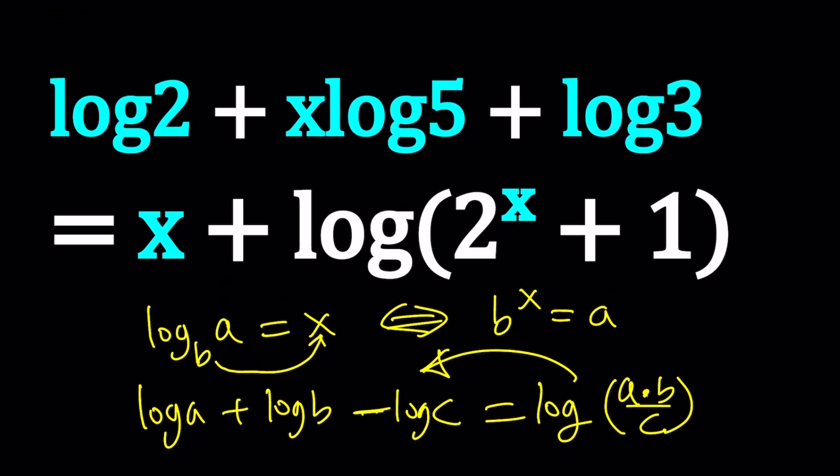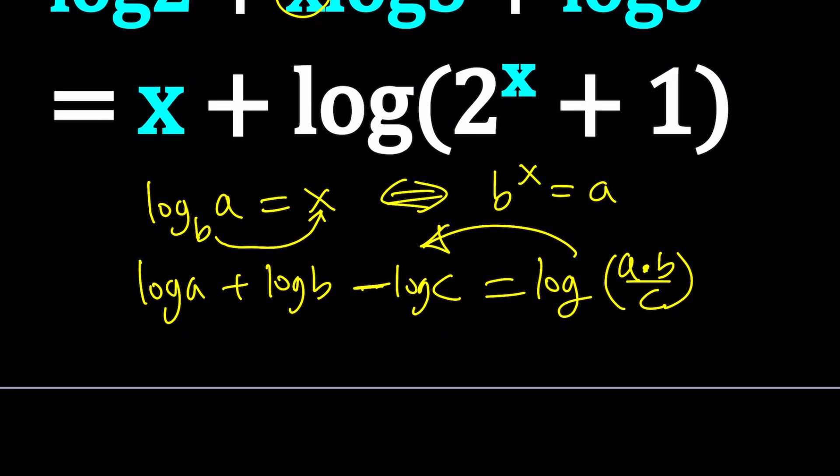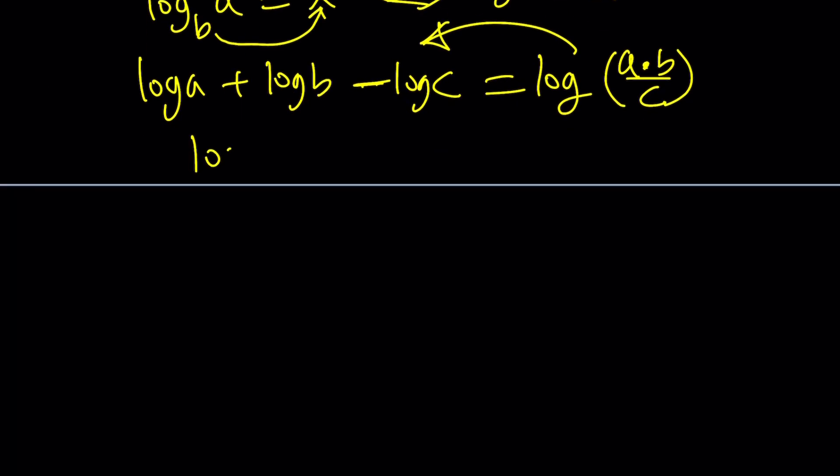We're going to condense here, but before we do that, we have to use the power property. What is the power property? If you have log a to the n, you can write it as n times log a. I'm not specifying the base when I don't, it's usually base 10. This property works both ways, so if you have a coefficient, you can make that an exponent. That's what we're going to do here.